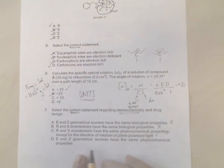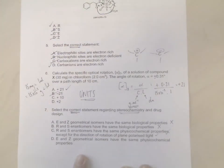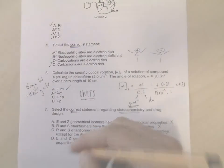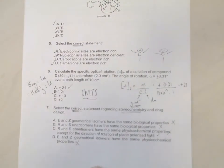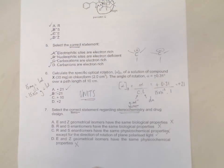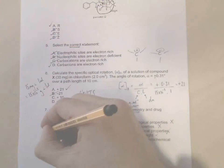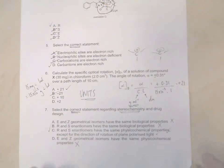D: E and Z geometrical isomers have the same physical chemical properties. Well again that's not true, because I gave you examples of double bond isomers where one is a liquid at room temperature, one is a solid. So they have different physical properties. So this answer for seven is C.